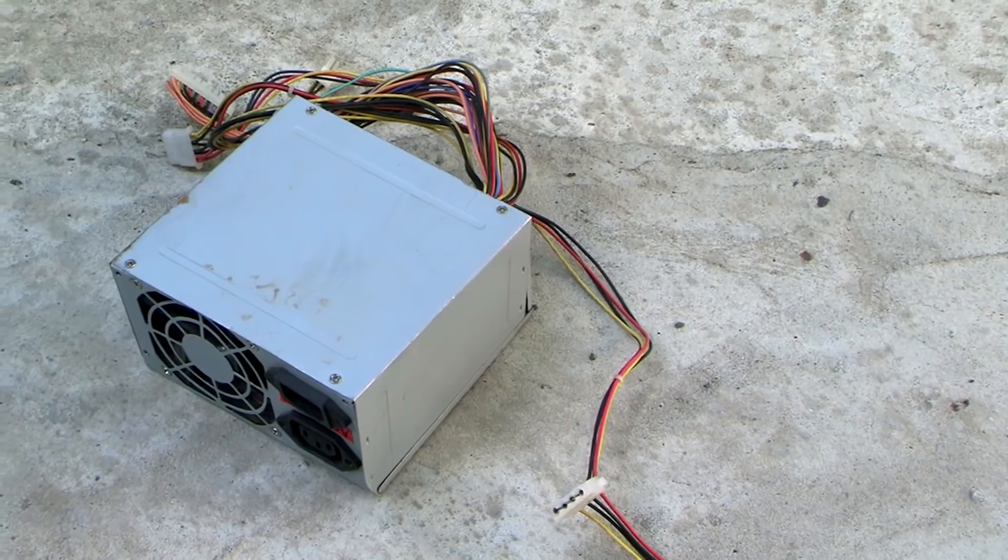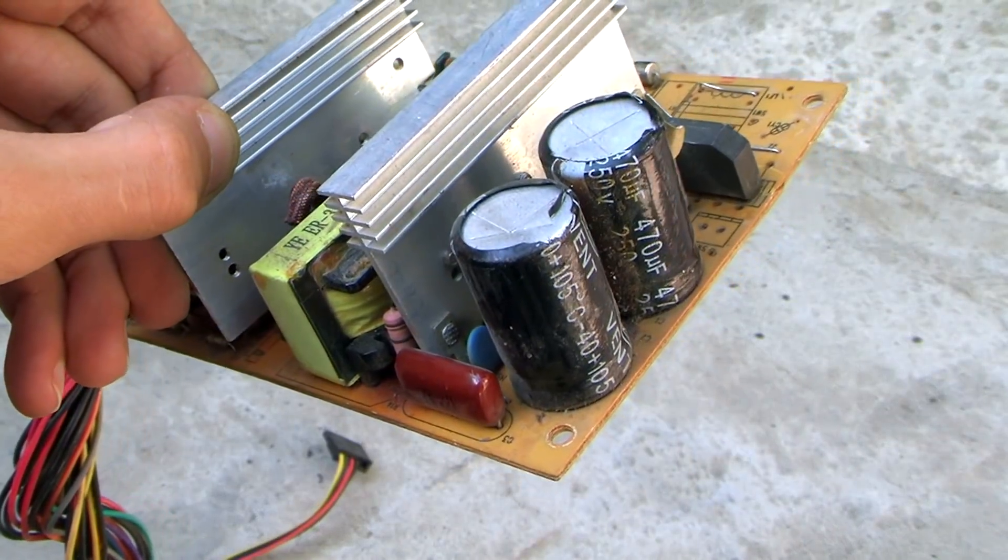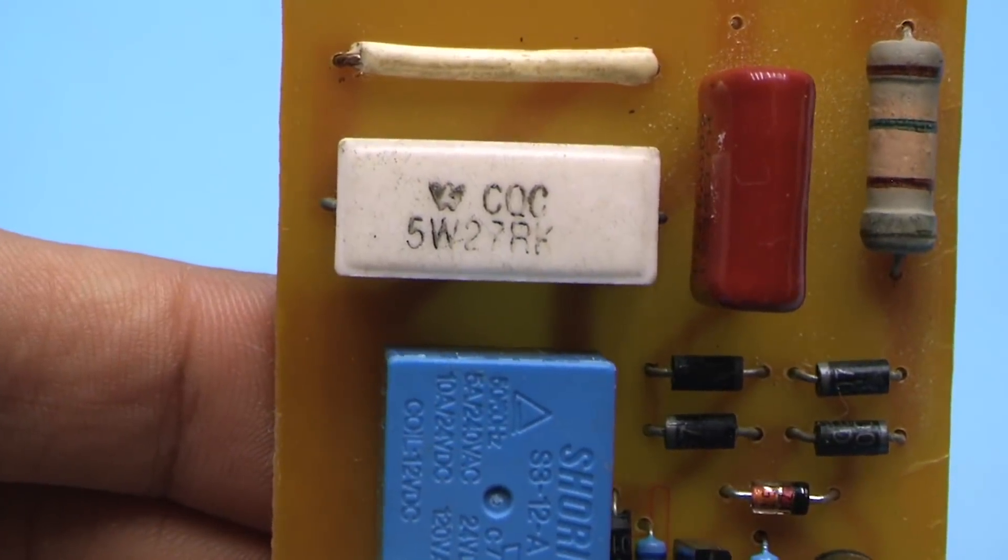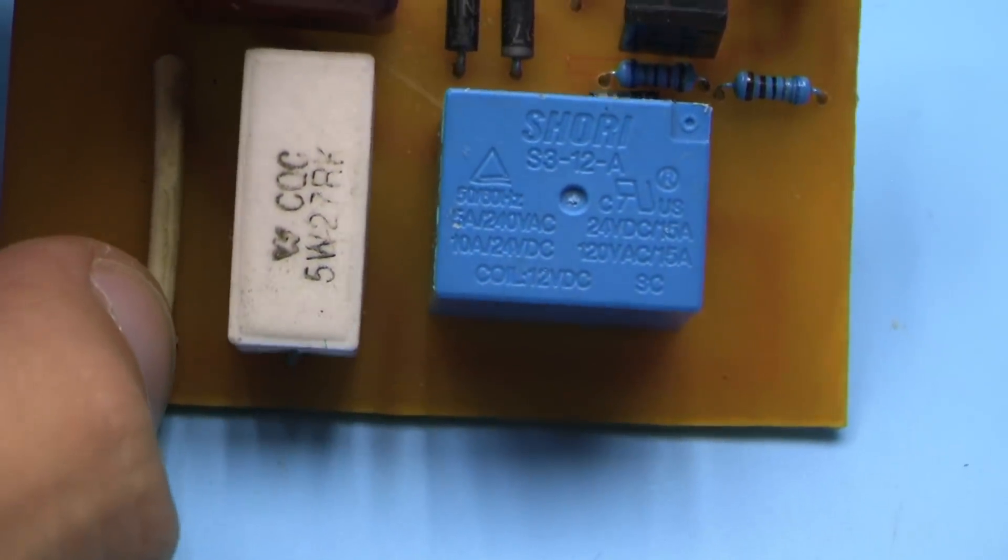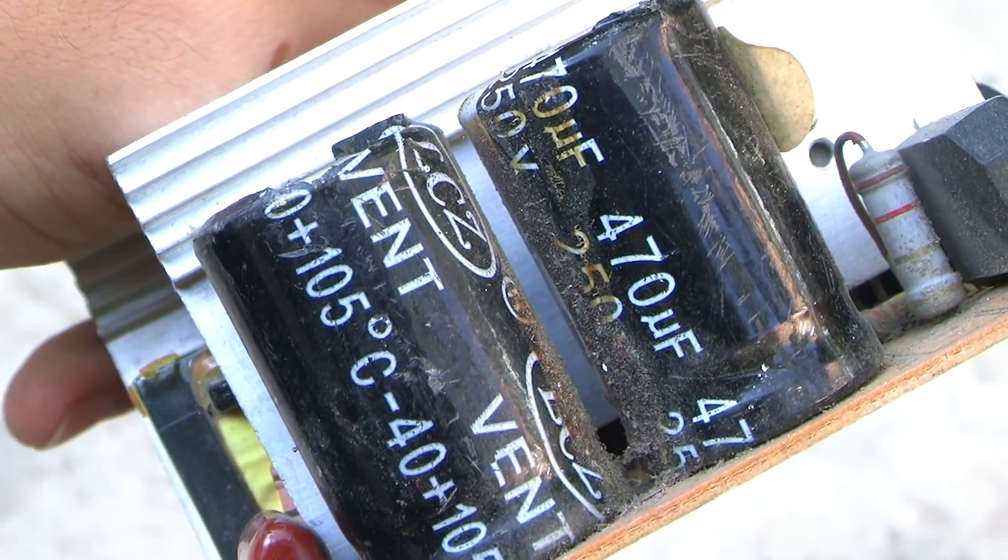The same thing will happen if you connect a computer power supply to this device. First, the capacitors built into the power supply will be smoothly charged through the resistors. And once they are charged, the relay will operate and full voltage will be applied. And since the capacitors are already charged, the starting current is eliminated.